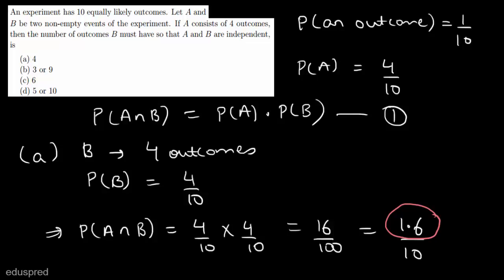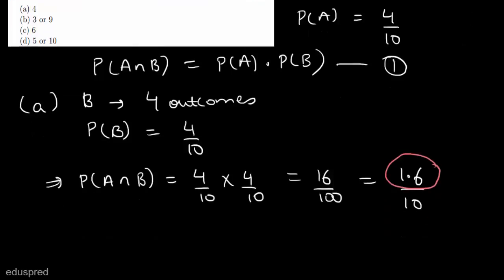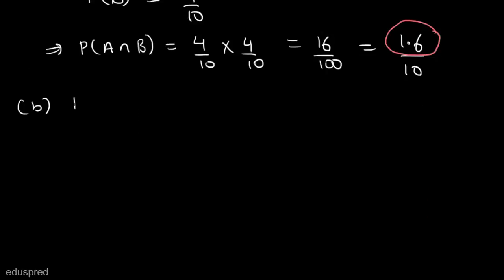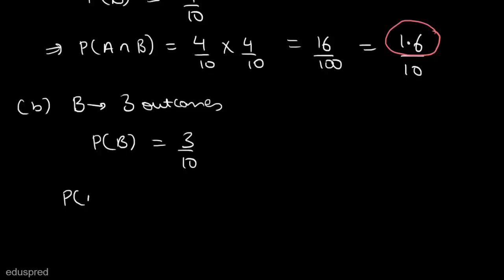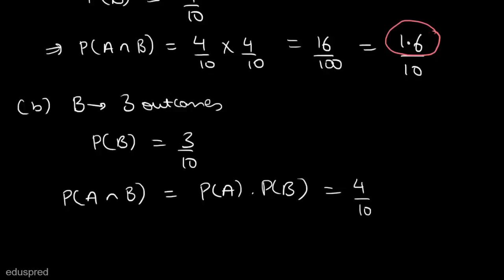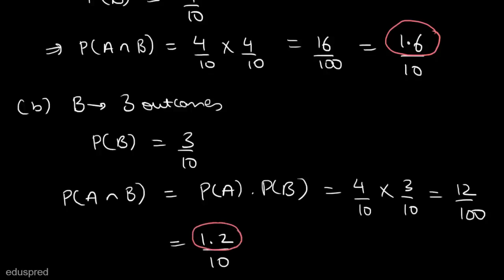Let's move to option B. In option B, we are given either 3 or 9. Let's say B has 3 outcomes. In this case, the probability of B is equal to 3 divided by 10, and the probability of A intersection B is equal to 4/10 multiplied by 3/10, which equals 12 divided by 100, or 1.2 divided by 10. Using the same logic, we cannot have 1.2 here, so option B is not the answer either.